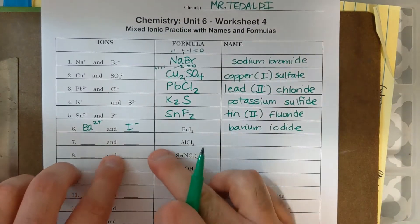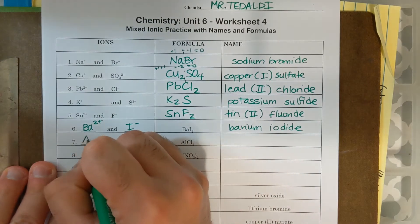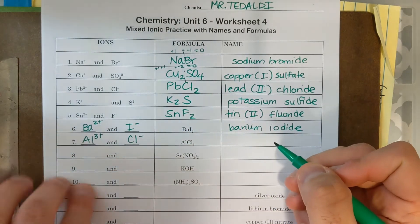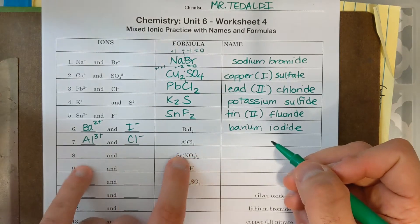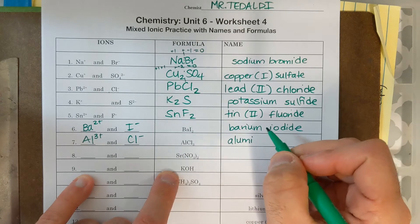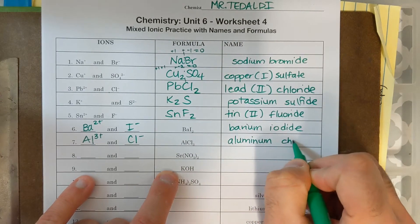Next, I got AL, CL three. AL is aluminum, it's got a three plus charge. CL is chloride, minus charge. Aluminum chloride then. Aluminum is not a transition metal that requires a Roman numeral, so it's going to be aluminum chloride.